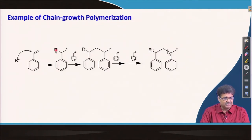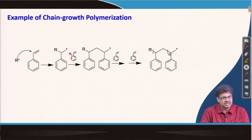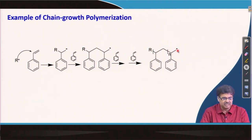One example is synthesizing polystyrene. R* could be a radical or cation. First, there is the initiation step; once initiated, more and more styrene molecules get added to the chain end, building a long polymer chain. This chain will ultimately be terminated by a statistical mechanism, which we will discuss in detail when covering chain growth polymerization.